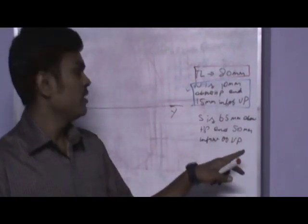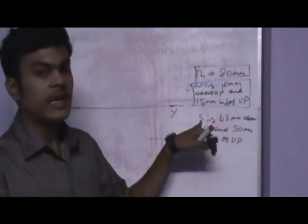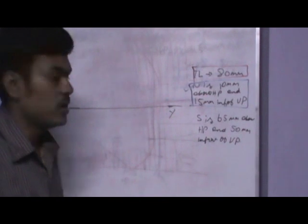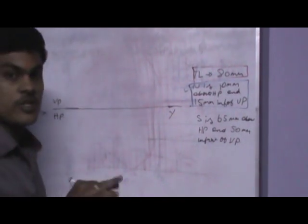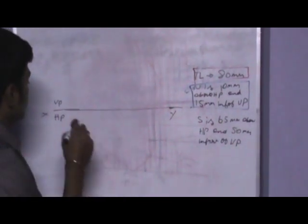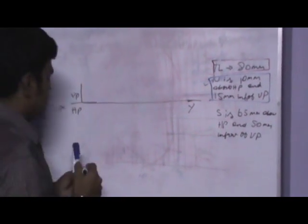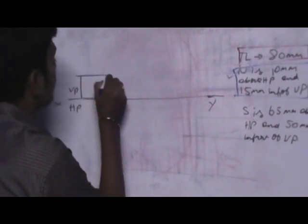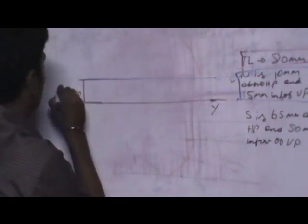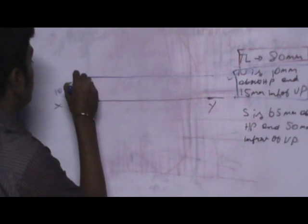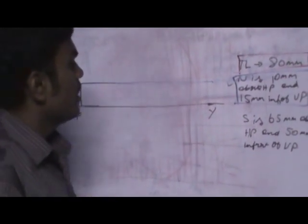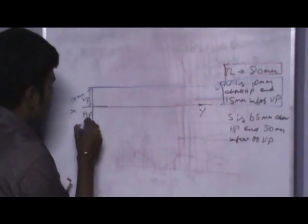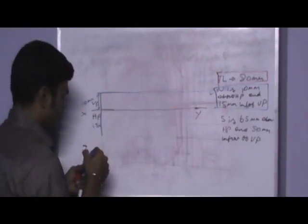Now look at the question. One end of the line, that is N — the line is NS. One end is N. It is 10mm above HP. Above HP means the projection of the line falls on VP, where it falls is 10mm above HP. So I have taken 10mm above HP, and 15mm in front of VP.